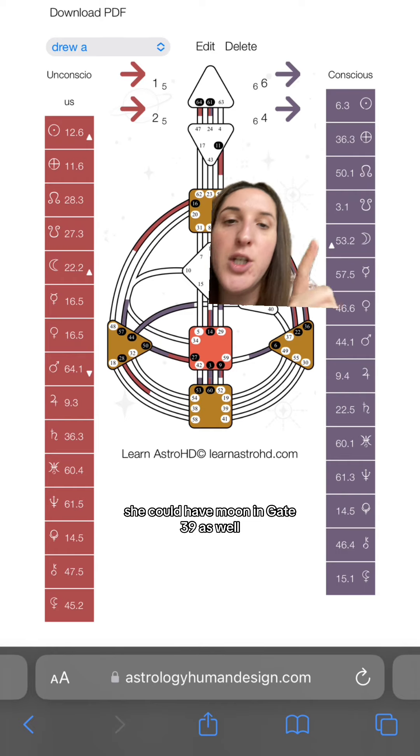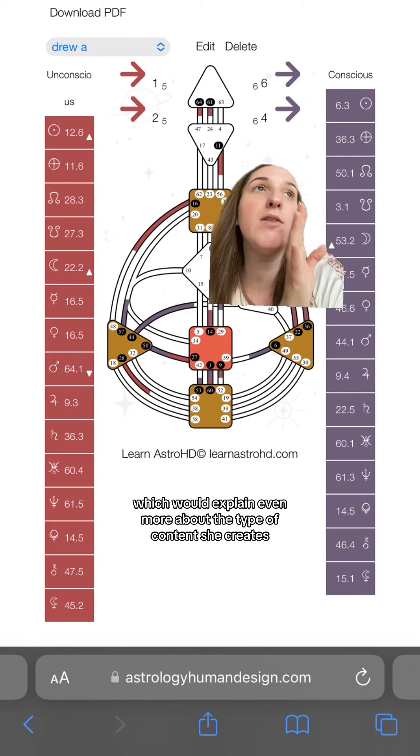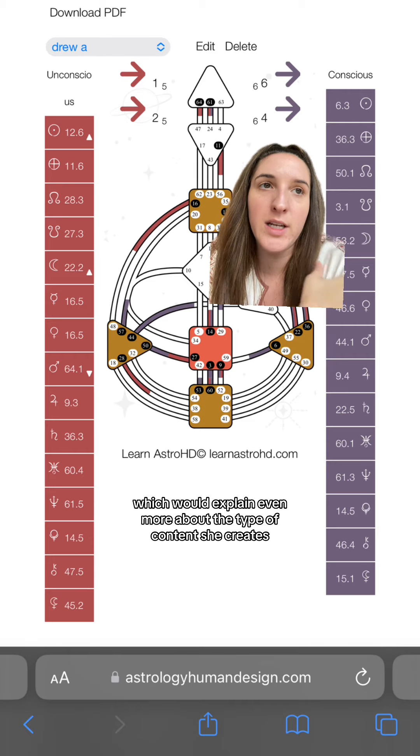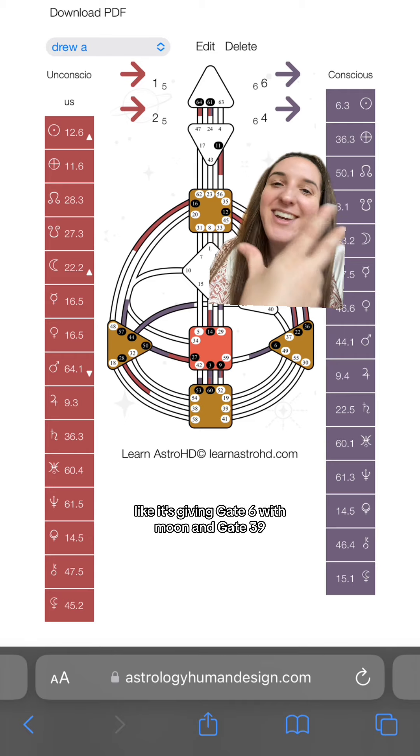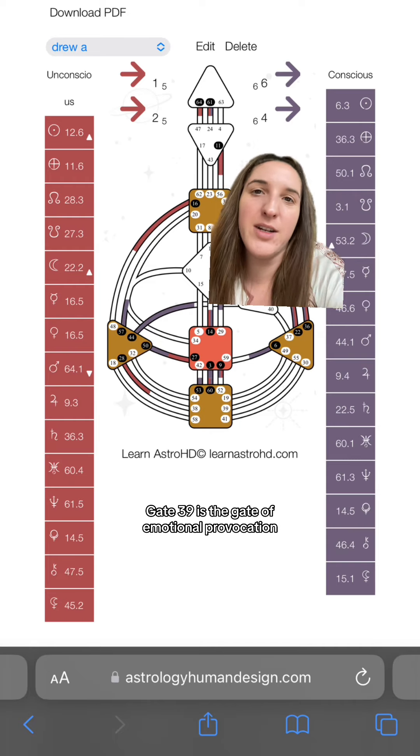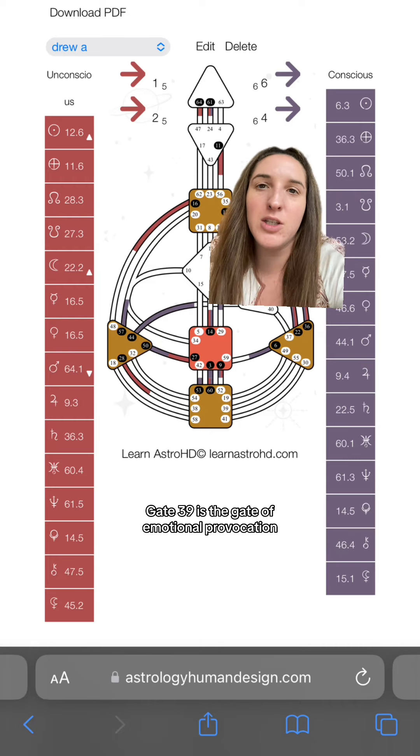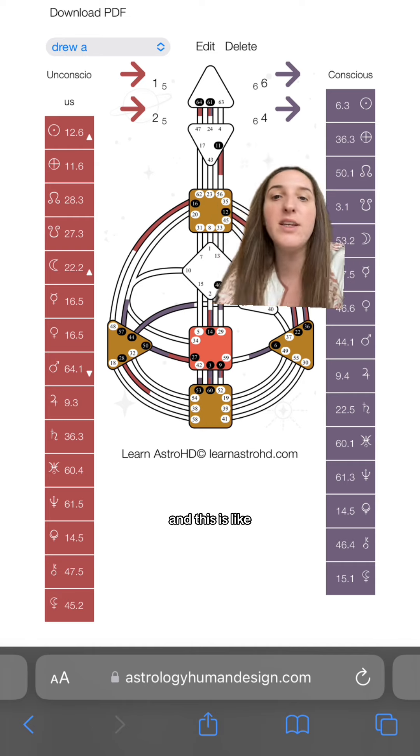Depending on her accurate birth time, she could have moon in Gate 39 as well, which would explain even more about the type of content she creates. Literally, that's part of the reason she's famous and she just came out with a book. Gate 39 is the gate of emotional provocation, so she literally emotionally provokes people that bully her in her comments.